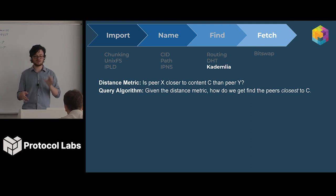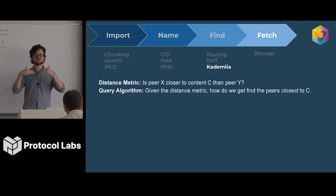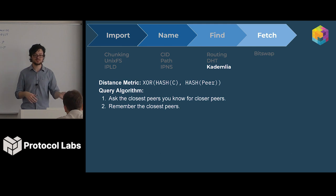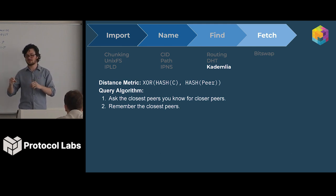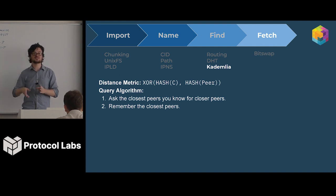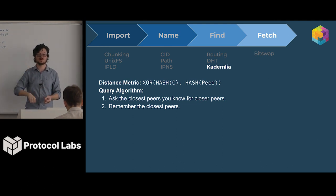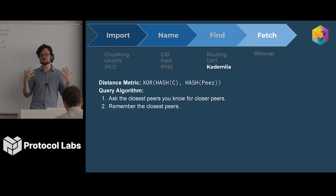Specifically, Kademlia uses a symmetric XOR of the hash of the content and the hash of the peer. The query algorithm is quite simple: you ask the closest peers you know about which peers are closer, and they give you a set of peers that are closer. Kademlia has a neat property where everyone remembers peers next to them, then peers halfway further, then halfway further again. That means when I'm trying to find content, I can always get halfway closer each time — the first hop goes probably across the network, and each subsequent hop brings me halfway closer again. I highly suggest you read the Kademlia paper if you want to learn more.